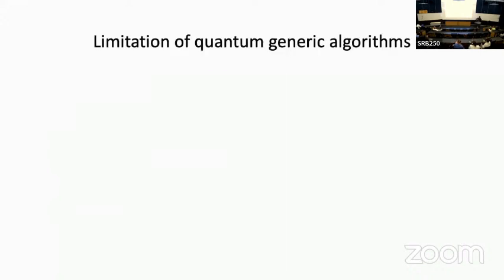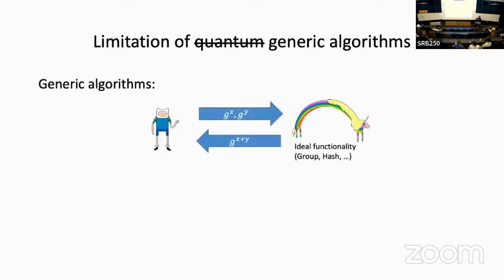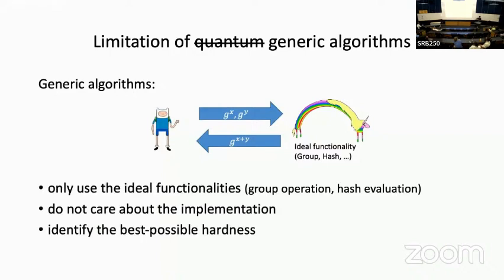This talk is about the limitation of quantum generic algorithms. It's probably better to start with just the limitation about generic algorithms. It's a kind of black box approach to showing lower bounds. In this model, we consider generic algorithms where we want to study some ideal functionality of our hash function or groups. We just assume that ideal functionality is given as an oracle and the algorithm only accesses them in a black box way or in a generic way. In this way, we can identify the best possible hardness or best possible security of the hash function and problems in group structure.